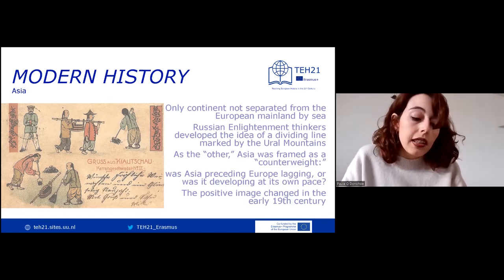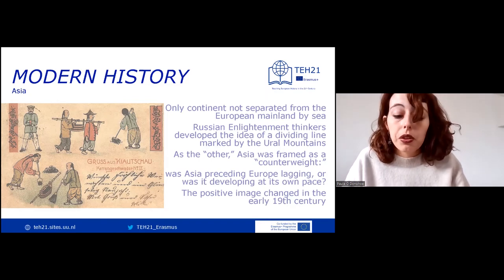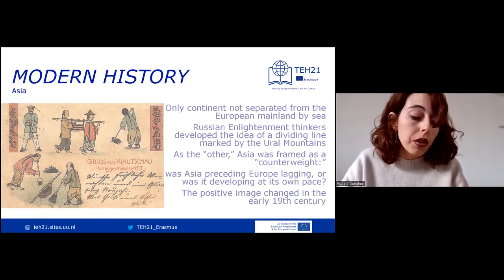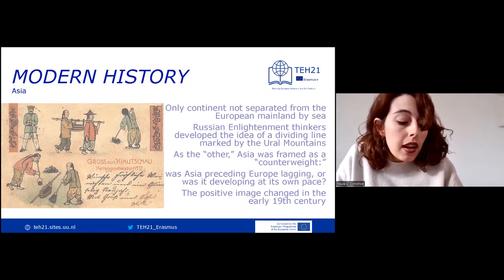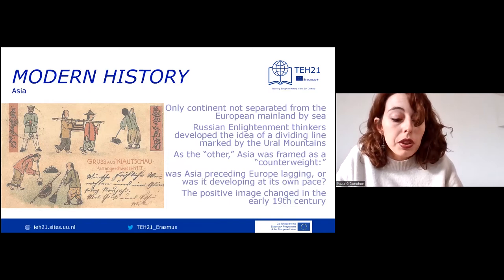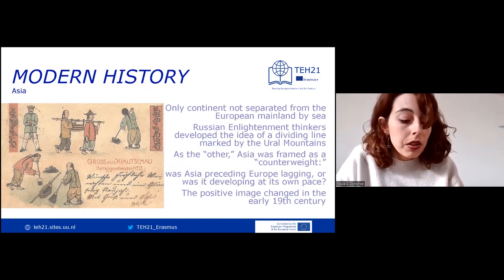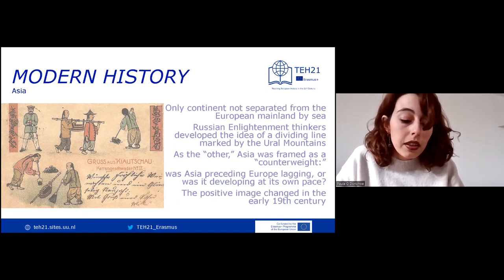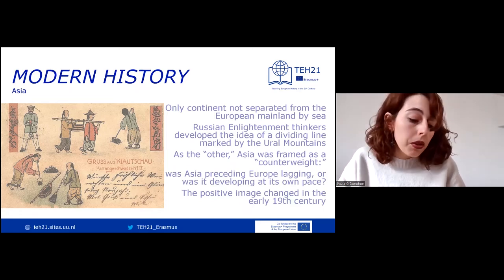In the early 18th century, Russian Enlightenment thinkers, wanting to prove that the Russian Empire was European, developed the idea that the divide and border was in the Ural Mountains. As Europe's other, Asia was framed as a counterweight and perceived either on equal terms or for normative grounds. These representations carried different assumptions of temporality, including schemes of linear progress and the possibility of different paths to modernity.